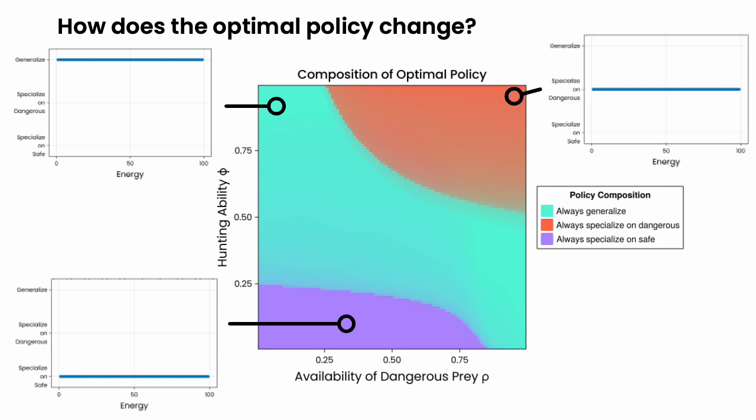And on the right top, where the availability of dangerous prey and the hunting ability is high, it is best to specialize only on dangerous prey regardless of your energy level.